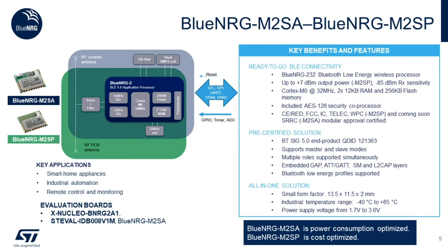The BlueNRG M2SA and M2SP are based on the BlueNRG-2 SoC, running on a Cortex-M0 with 256K of flash and 24K of ultra-low leakage RAM, with an output power that goes all the way to 7 dBm in the M2SP. It comes with a rich peripheral set, which includes I2C, SPI, UART, DMA, PDM, just to mention a few. These are pre-certified modules, which help reduce the overall certification and engineering cost. The BlueNRG M2 modules can also be used in network co-processor mode, communicating to the host MCU using a UART or SPI interface, giving designers access to the Bluetooth 4.2 feature set and adding flexibility to their design.